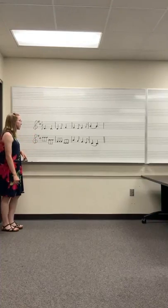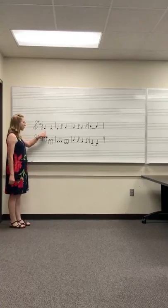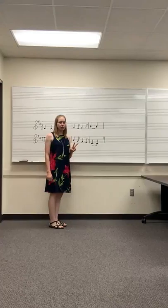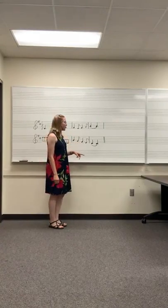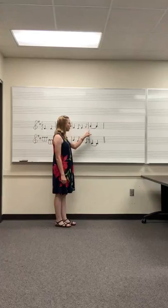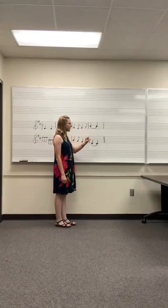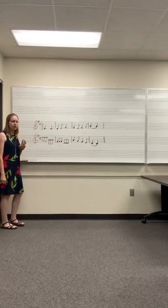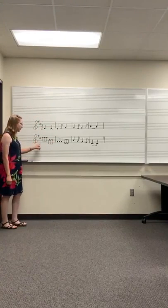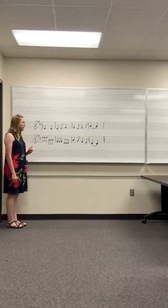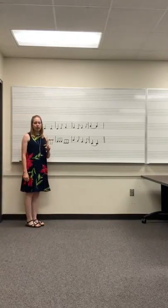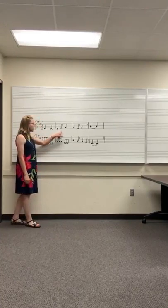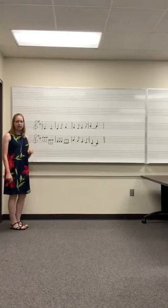In compound duple meter, one sound on a beat has a dotted quarter note, and we count it 'ta.' Two beats for one sound, we call it 'ta-ah,' shown with two dotted quarter notes tied together. Three even sounds on one beat use three eighth notes, called 'ta-ki-da.' One long and one short sound on a beat is 'ta-da,' represented with a quarter note and an eighth note.